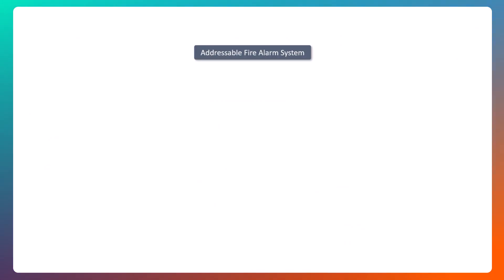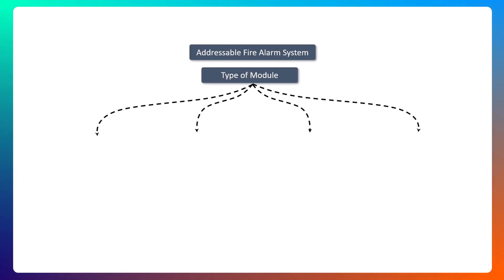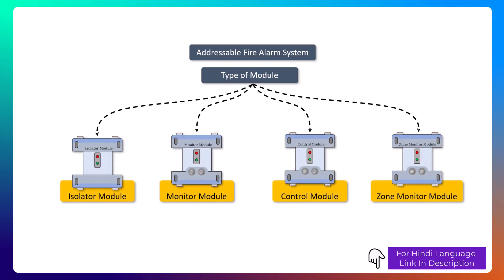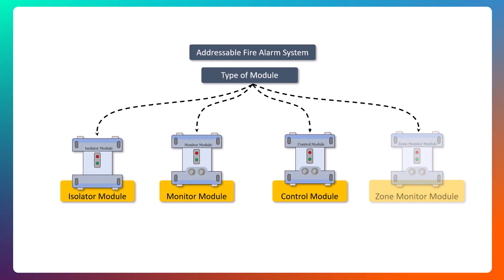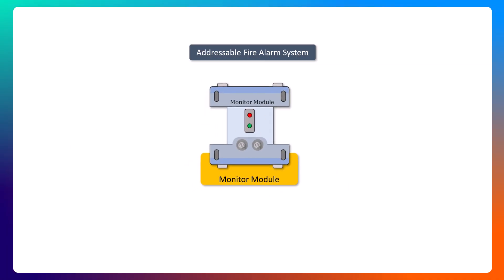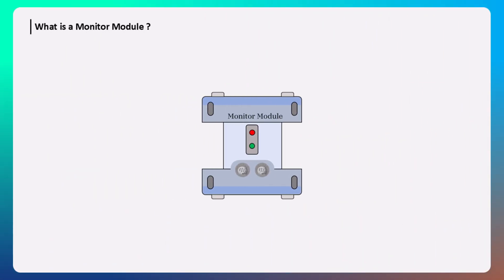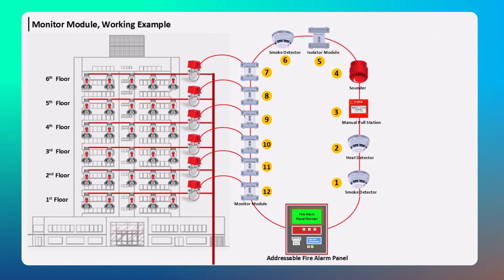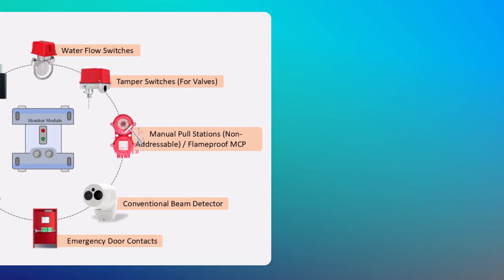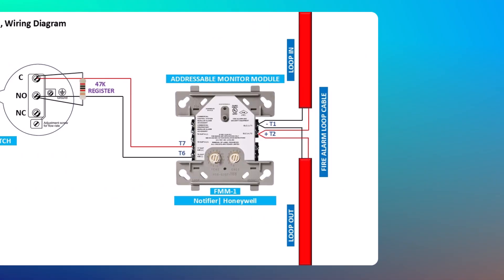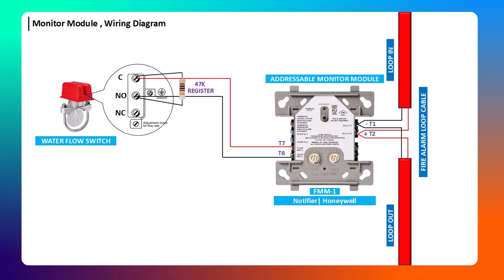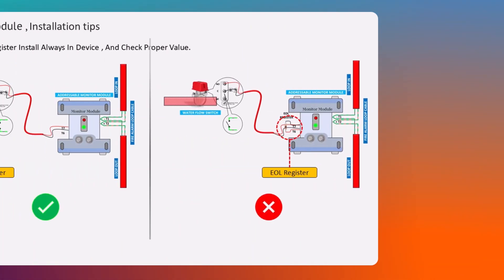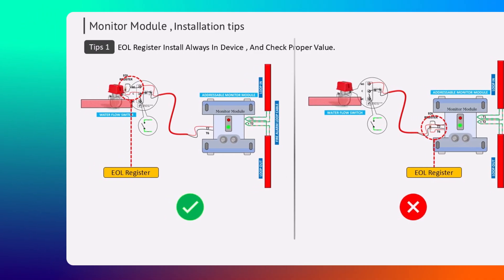Various types of modules are used in addressable fire alarms, such as isolator modules, monitor modules, control modules, and zone monitor modules. In today's video, we will learn about the monitor module — what it is, how it works with an example, what its function is, in which applications it is used, how its wiring connection is done, and how it works.